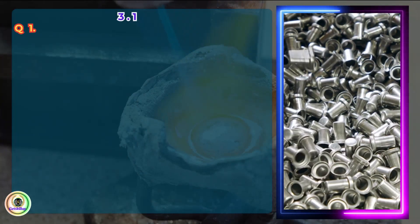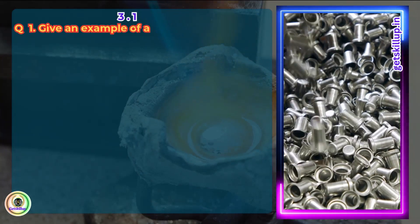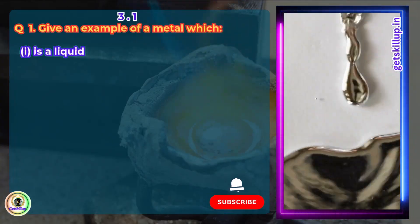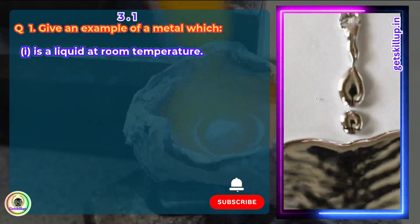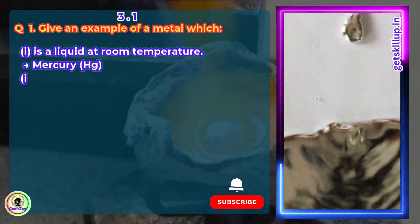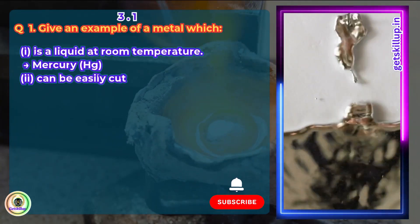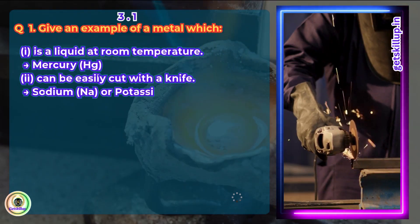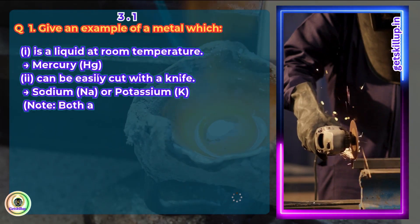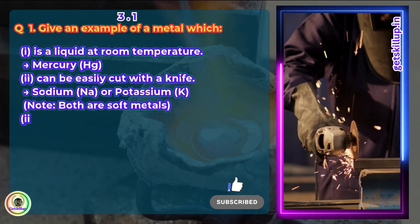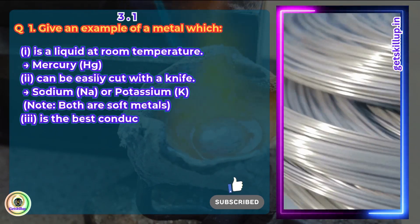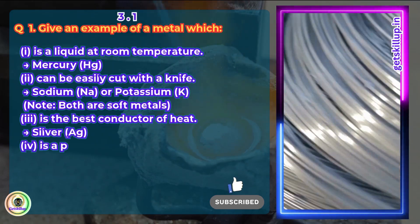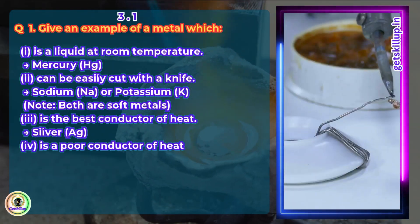Question 1. Give an example of a metal which is a liquid at room temperature. Mercury. A metal which can be easily cut with a knife: Sodium or Potassium. Best conductor of electricity: Silver. Poor conductor of electricity: Lead.